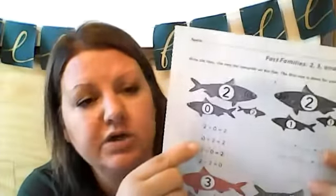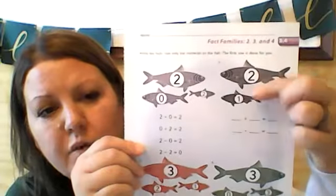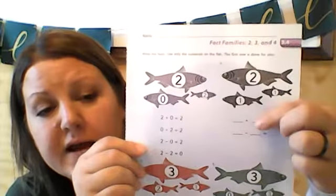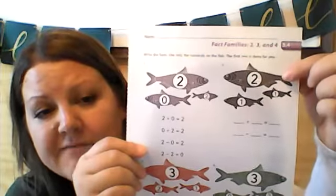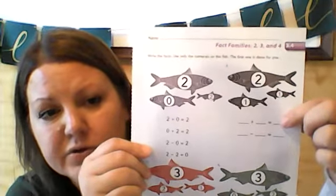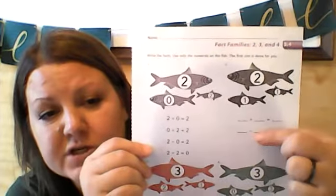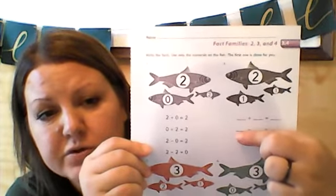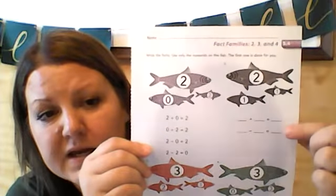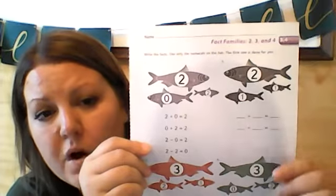So first grade, you're going to do this worksheet. Again, the first one they did shows you how they did it. The next one, you're taking this number, the two, and then the one and the one, and you're writing your own addition problems using that fact family. So one plus one equals two. Because this one's a subtraction, you're going to put your biggest number first, two minus one equals one.